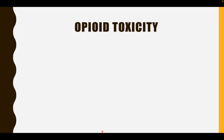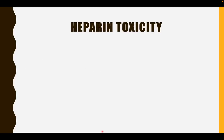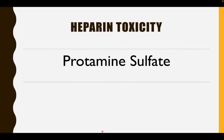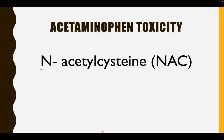What are the pearls for opioid toxicity? Number one, it acts mainly on the mu receptors, and this will manifest as respiratory depression, euphoria, and pinpoint pupils. The antidote for opioid toxicity is naloxone. What is the antidote for heparin toxicity? It is protamine sulfate.